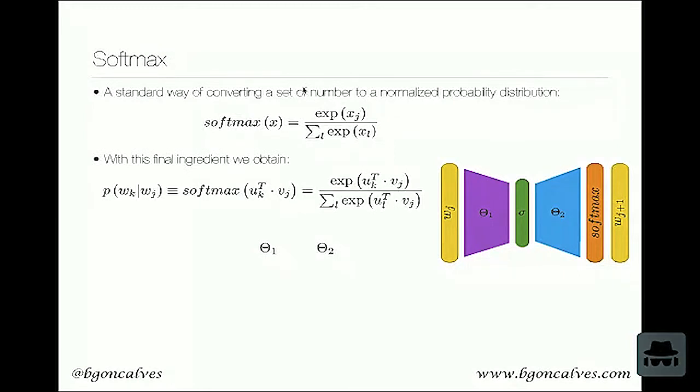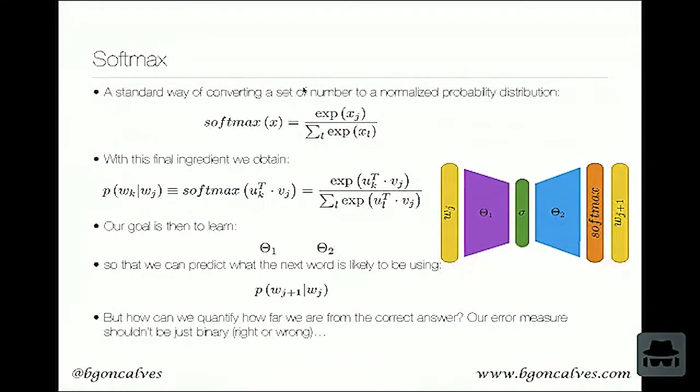And what we want instead is actually to get some type of probability. So we want to say it's 90% likely that this is the word we should be expecting and it's 10% likely it's this other word. And the way to do this is we convert this to a normalized probability distribution by using the softmax function. And then we compare the output of the softmax function with the actual context we were expecting. So I squeezed in the softmax layer just to make it clear. So softmax is a standard way of converting a set of numbers to a normalized probability distribution. So you just take the exponential of each value and then divide by the sum to normalize it. When you have this final ingredient, then what you get is finally your mathematical definition of what is the probability of having one word in the context given that you have this word in the input.